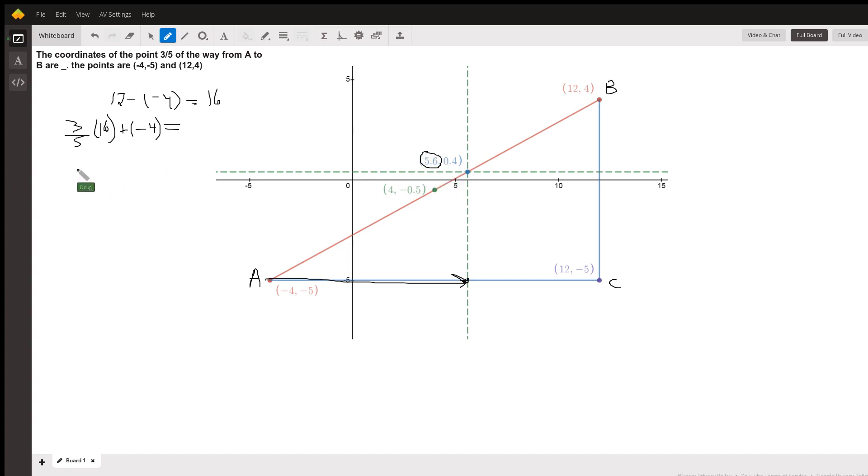We've got 48 fifths, and I'll convert the negative four to fifths, that's negative twenty-fifths, or 28 fifths, which is five and three-fifths or 5.6.